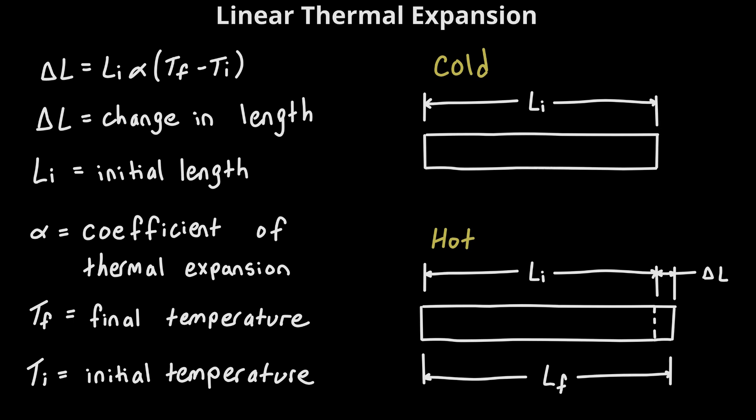So what this equation allows us to do is it allows us to say, okay, if we have an object which is changing temperature and we know what the initial length of it is and we know what material it is, then we can use this equation to figure out how much that length is changing. Now let's take a look at an example to see how we can use this equation.